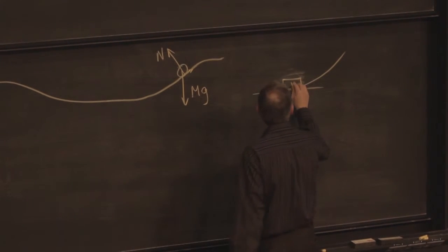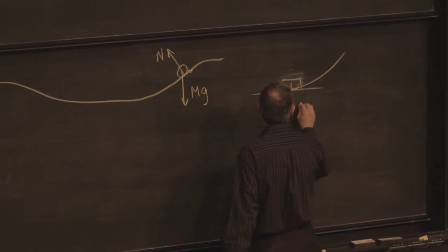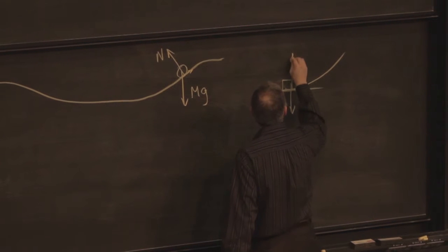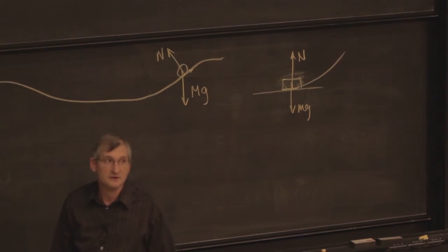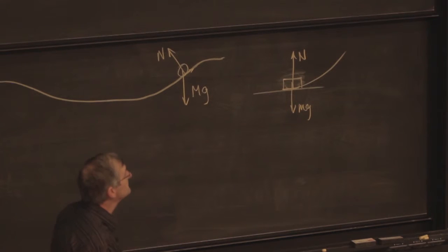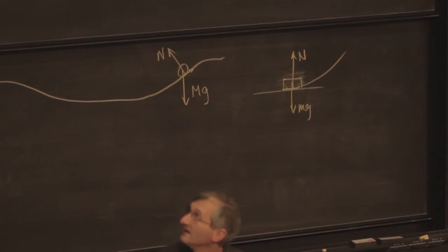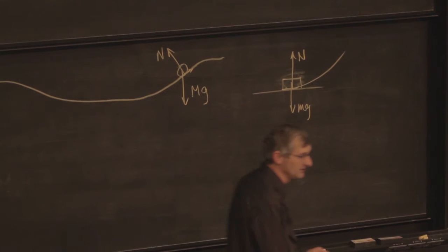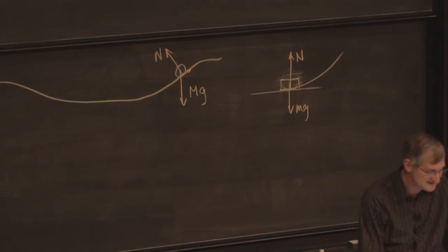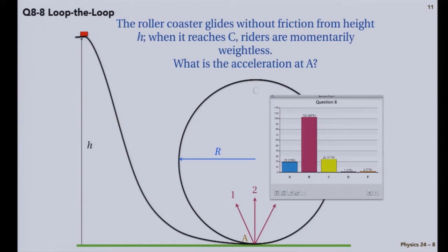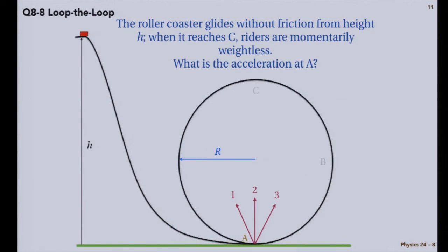Mg. Anything else? Friction? We're in ice world — it's a strange roller coaster in ice world. We're not worrying about friction; it says glides without friction. So 2 is indeed the right answer.